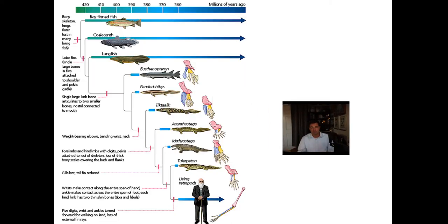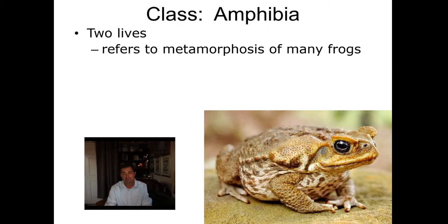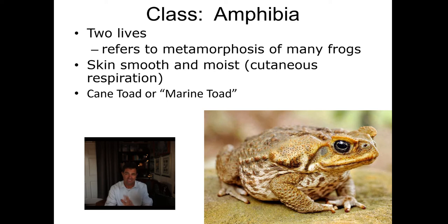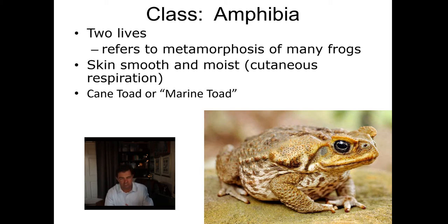We have very good examples of those fossils, and you don't need to know all the extinct species. The point is that is a very complete record. When we talk about amphibians, the word amphibian refers to the fact that they have two lives, which is a reference to the metamorphosis many frogs go through. They generally have skin that is smooth and moist, and they have a lot of cutaneous respiration — they breathe through their skin. There are really no marine amphibians; the closest is probably the marine toad, also called the cane toad, from South America, but it's not truly marine.